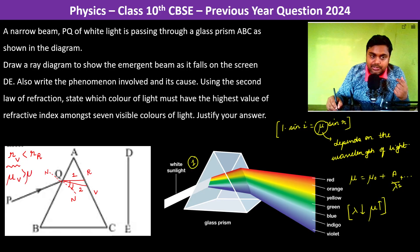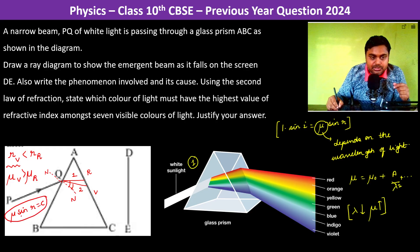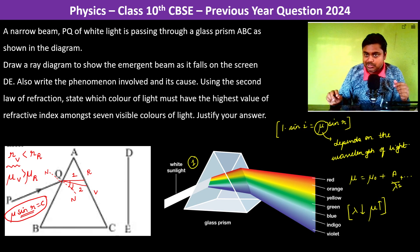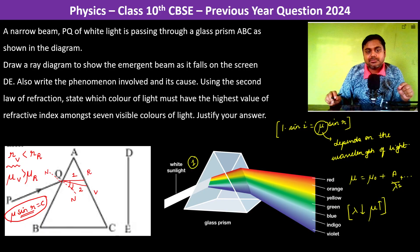Now since refraction angle is less for violet, therefore the µ of violet will be more than the µ of red ray. Because µ × sin r is going to be constant.